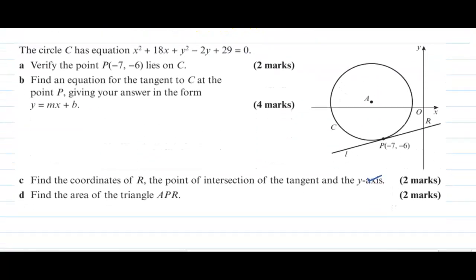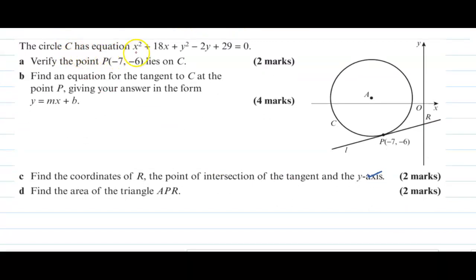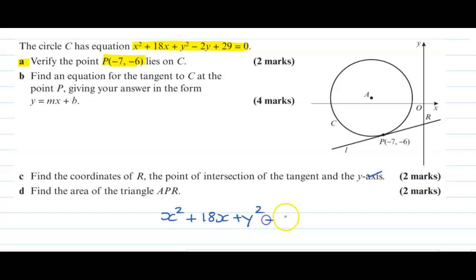Now, there is a question. The circle C has equation x² + 18x + y² − 2y + 29 = 0. Verify that the point P(−7, −6) lies on the circle. Please pause the video and have a go. Welcome back — now I am going to solve this question and you can check your working against mine.